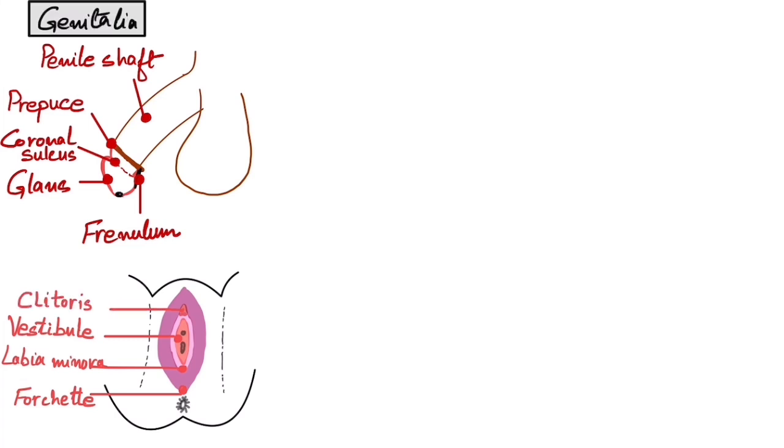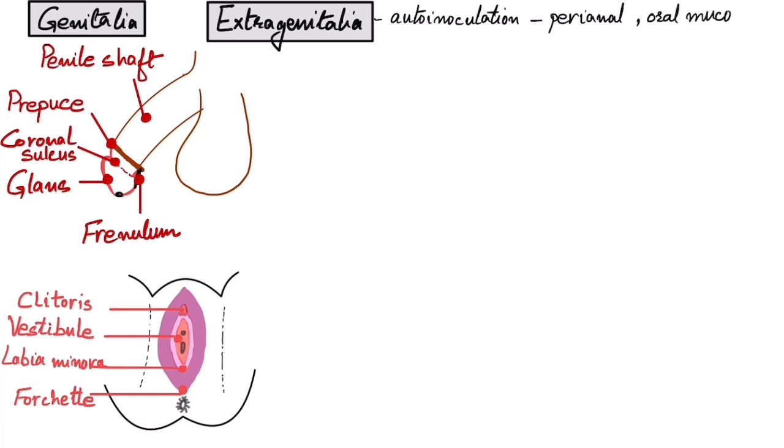Now we'll move on to the extra-genital sites. It occurs in extra-genital sites due to auto-inoculation of the bacteria. That means the patient itself moves the bacteria from one place to the other via finger manipulation, etc. It can be on the perianal area, the oral mucosa, fingers, thighs, buttocks, or breasts. It is important to know that the perianal and oral mucosa are mostly involved due to unnatural sex practices.